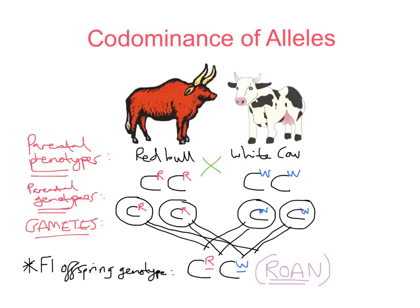In an exam question, you may be told the genotype of the male and female parent, but it's always worth not assuming that the gene in question is sex-linked. Now I'm going to give another exam question based on this scenario. The question asks: describe the classical phenotypic ratio for a co-dominant gene resulting from the cross of two heterozygous parents. So we're crossing two roan cattle, and using a Punnett square is probably the best way to lay this out.